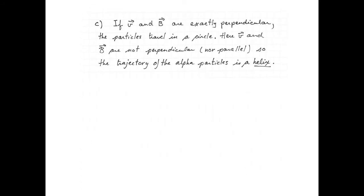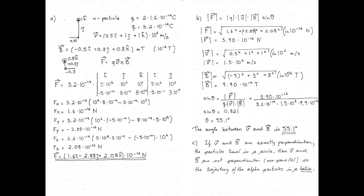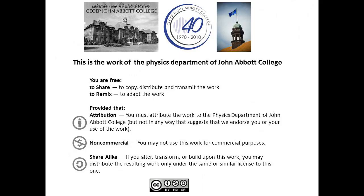Finally, since the angle between the velocity vector and the magnetic field vector is not 90 degrees and not 0, the alpha particle travels in a helix around the magnetic field lines. Here's what the full solution looks like on two pages. Spread the joy of physics!